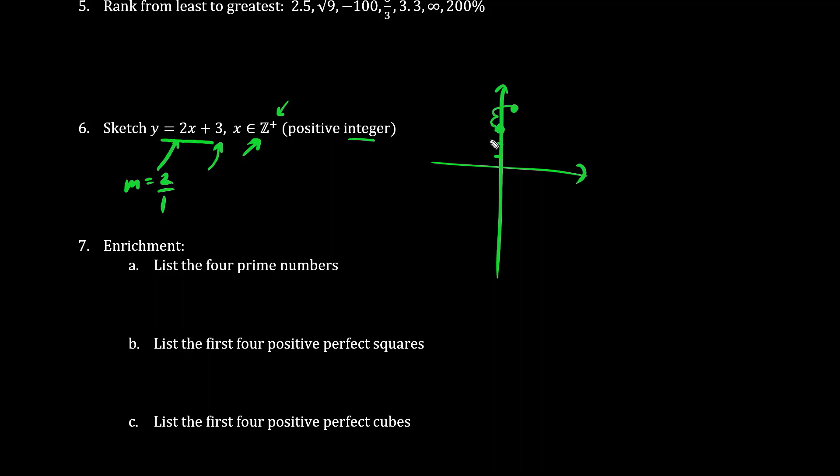So normally we would draw a line connecting these points. Essentially we go 1 unit to the right and 1, 2 units up. 1 unit to the right and 1, 2 units up. So the pattern continues forever and ever this way. However, we're only interested in positive integers. And 0 is not positive so we do not include this y intercept.